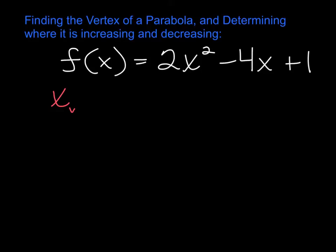So the x part of my vertex can be found by taking the opposite of b and dividing by 2a, and you'll notice that that's kind of part of the quadratic formula, that little piece in the front of it.